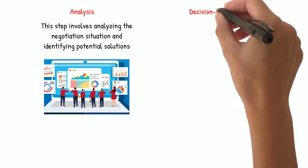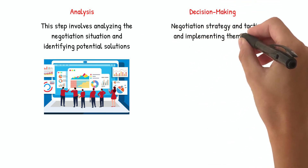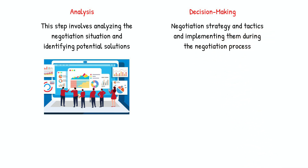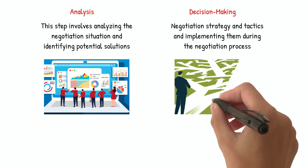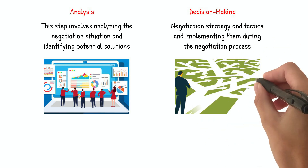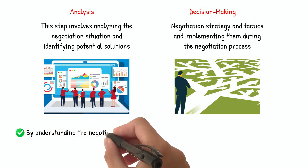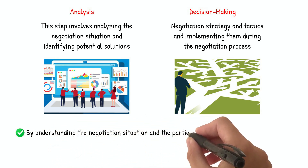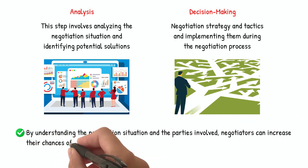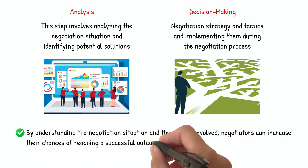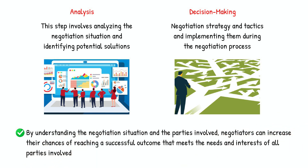Decision Making: this final step involves making decisions about the negotiation strategy and tactics and implementing them during the negotiation process. The imaging process plays a crucial role in preparing negotiators for the negotiation process and helping them to develop effective negotiation strategies. By understanding the negotiation situation and the parties involved, negotiators can increase their chances of reaching a successful outcome that meets the needs and interests of all parties involved.